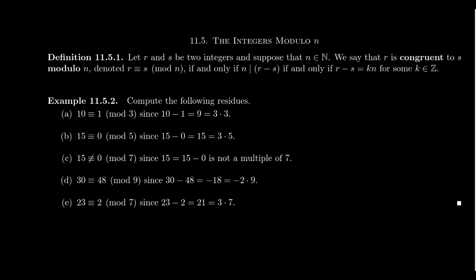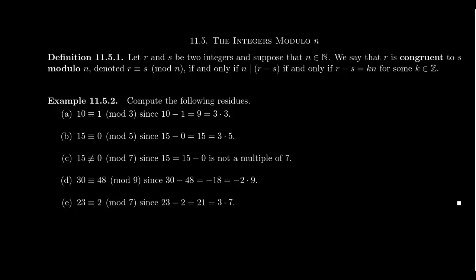Let's also see a case where the congruence does not hold. 15 is not congruent to 0 modulo 7 because 15 minus 0 is 15, and 15 is not divisible by 7. So the modulus itself matters very much: 15 is congruent to 0 mod 5, but 15 is not congruent to 0 mod 7. A different modulus gives you very different results.